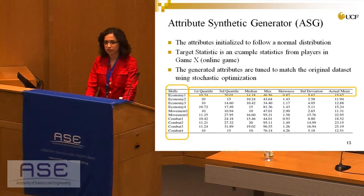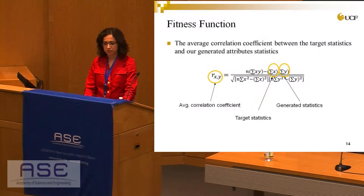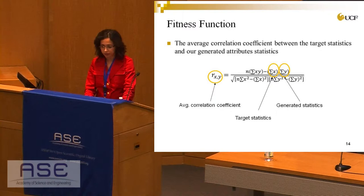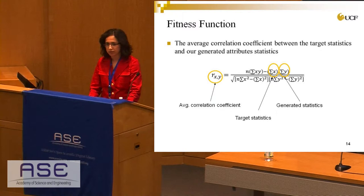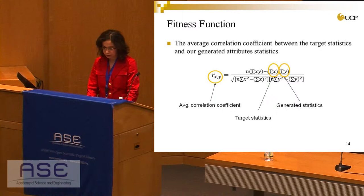Our fitness function for stochastic optimization is the average correlation coefficient between the target statistics and the generated statistics in our network, using the equation where r is the correlation coefficient, x represents the target statistic, and y is our generated statistic. The optimization algorithms we implemented are particle swarm optimization and genetic algorithm, as they have been widely used as optimization techniques.